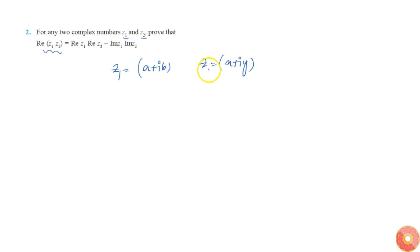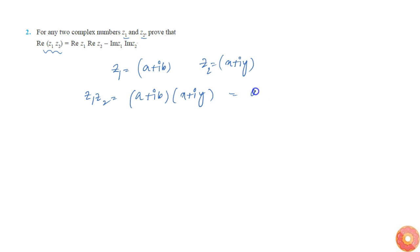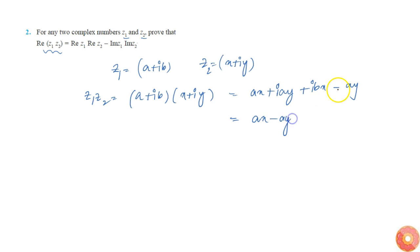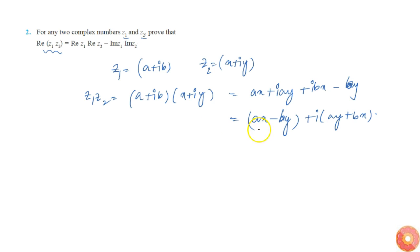So z2 equals x plus iy. Now z1·z2 is equal to (a plus ib) into (x plus iy), which expands to ax plus i·ay plus i·bx plus i²·by. Since i² equals minus 1, this simplifies to ax minus by plus i·(ay plus bx).